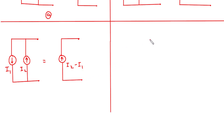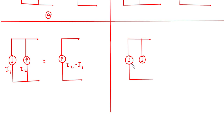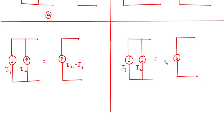One more possibility: let's say there are two more current sources both in the downward direction. Let's say this is I1 and this is current I2. The equivalent current source will also be in the downward direction, and its value will be the addition of I1 and I2, because they are in the same direction — that's why the resultant current source direction is also downward.